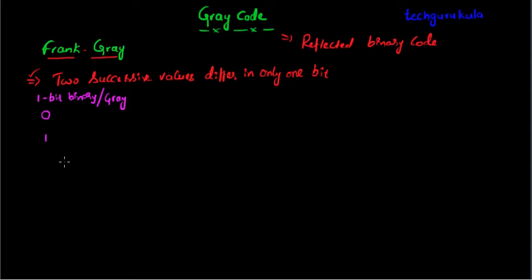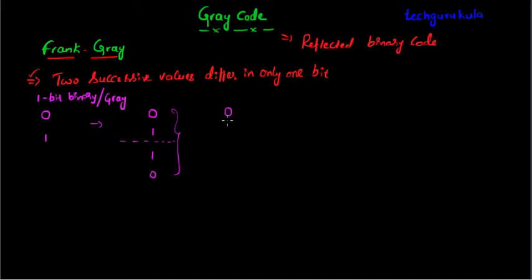Based on this, how do we construct a two-bit grey code? The way to construct it is: take 0 and 1 from this, and assume there is a mirror here. If you take the mirror image of this, we get 1, 0. Taking all these values — 0, 1, 1, 0 — place zeros in front of the first half of these values and ones for the rest of the half. This makes the two-bit grey code.